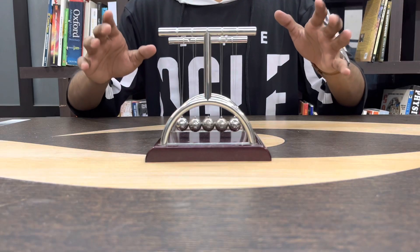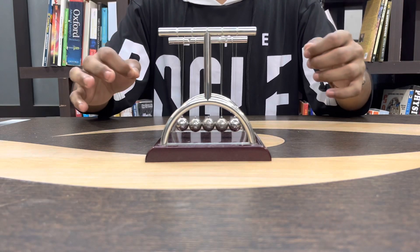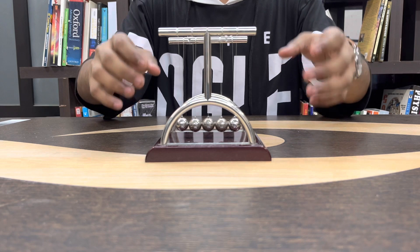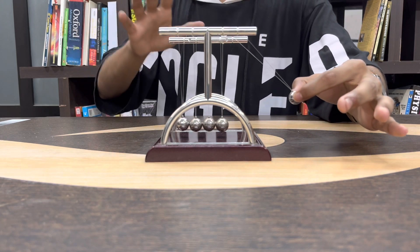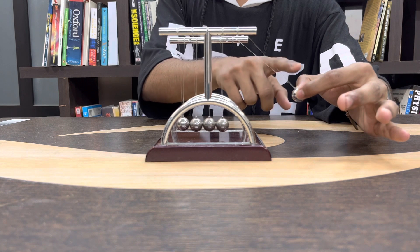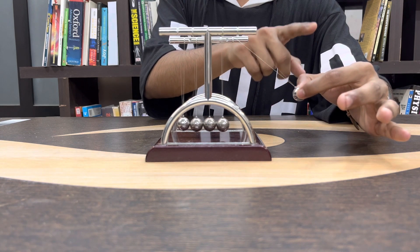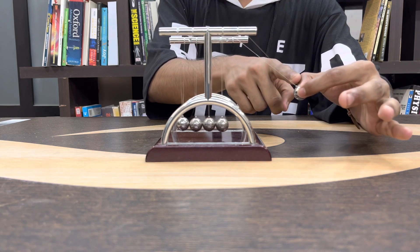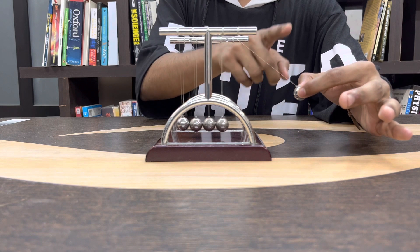So this is our system which is consisting of five balls. Now what is going to happen? There is an external force. My hand is external force and I just lift it up and I am going to give some velocity to this ball. So let's see what's going to happen.